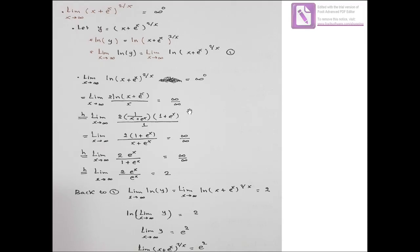Applying L'Hôpital's rule: the derivative of ln(x + e^x) is (1/(x + e^x)) · (1 + e^x) by the chain rule, divided by the derivative of x which is 1. Simplifying, we get 2(1 + e^x)/(x + e^x). Evaluating the limit gives ∞/∞ again, so we apply L'Hôpital's rule a second time.